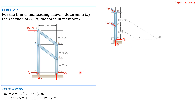At G2, the line of action of FAD and FH meet. By the principle of transmissibility, we can move FAD along its line of action to G2. The angle that FAD makes with the horizontal is arctan(0.75/1), which equals 36.87 degrees. The two components are horizontal and vertical, but we will not name the horizontal because we plan to take the moment at G1.